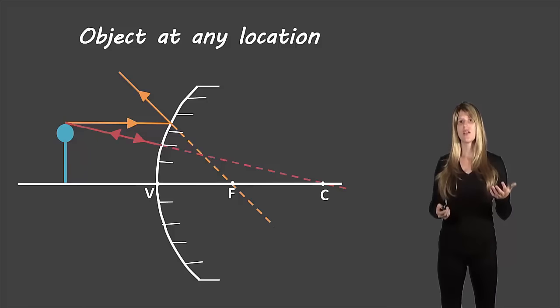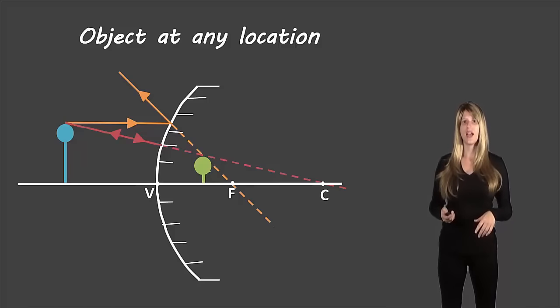Since our rays started at the top of the balloon where they cross will also represent the top of the balloon and since the string of the balloon went straight down to the principal axis the string of the image balloon will go straight down to the axis and this is what our object will look like.